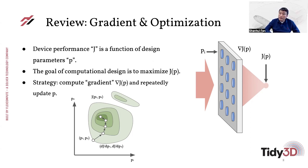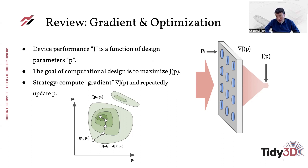From this review, one of the key steps in this optimization process is to be able to compute the gradient. Last time we talked about a naive way to compute the gradient through finite difference, where the number of computations scales linearly with the number of parameters. Today we're going to talk about the adjoint method, which is a remarkable method where the number of computations is essentially independent of the number of parameters you are trying to adjust.